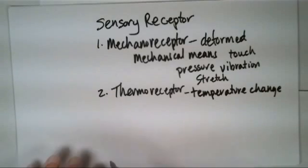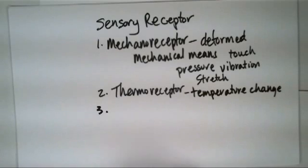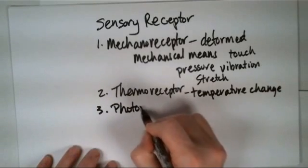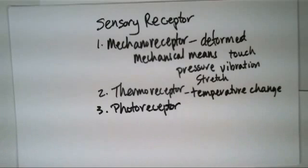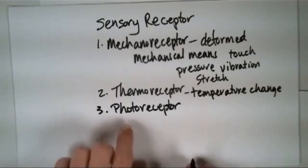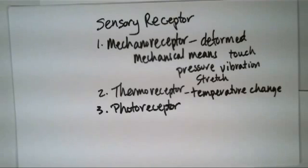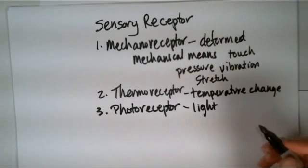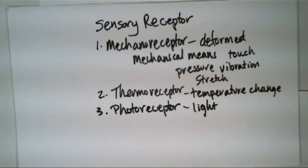That temperature change, the signal is then sent down that sensory neuron back to the central nervous system, saying 'Hey, it's got hotter, it's got colder,' those kind of things. The third type here are photoreceptors, and photoreceptors, just like the word says, photo, they pick up stimulus from light energy. We're looking at light. You can imagine what we're talking about here. We're talking about the receptors that are on your retina.